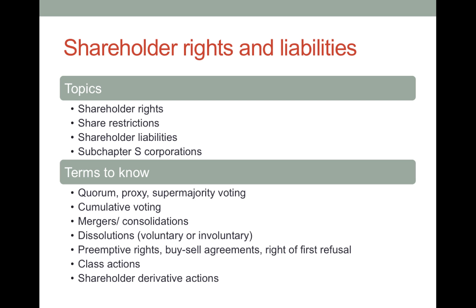Some corporations for unusual transactions will require some sort of extra vote. Cumulative voting is designed to allow minority shareholders to have some voice in choosing directors. A merger is when corporations come together and create one out of two corporations. Consolidations are very similar — sometimes they refer to consolidation as simply taking a few different business organizations and putting them all into one, so the terms can be interchangeable. Dissolution is when a corporation comes to an end; it's typically voluntary but could be involuntary. We'll talk further about preemptive rights, buy-sell rights, and rights of first refusal.